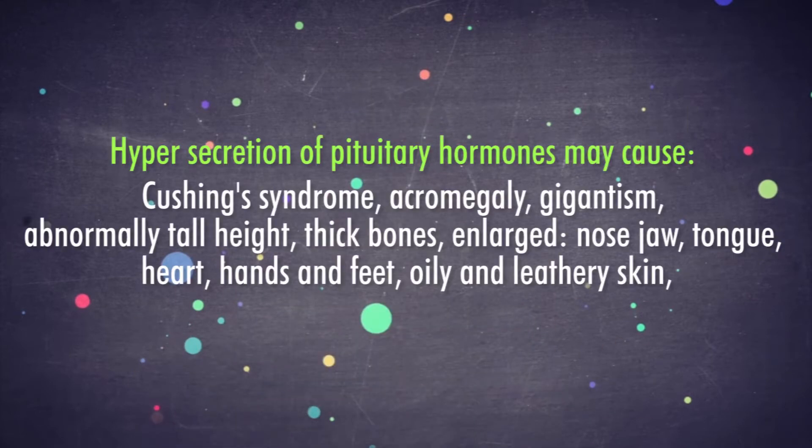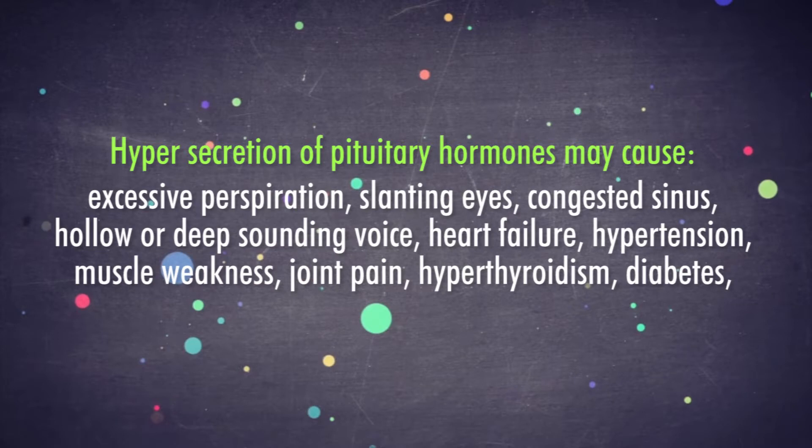Hypersecretion of pituitary hormones may cause Cushing's syndrome, acromegaly, gigantism, abnormally tall height, thick bones, enlarged nose, jaw, tongue, heart, hands, and feet, oily and leathery skin, excessive perspiration,